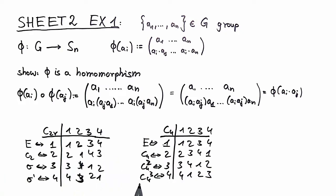Phi of c2 here is equivalent to taking the first and the third line. And we see these two are different for different groups. This is the solution for exercise one of problem sheet two. I hope you enjoyed it.